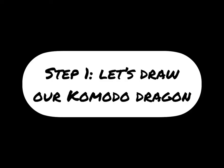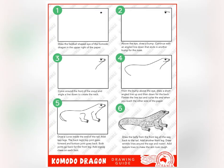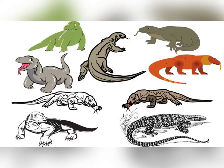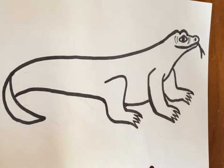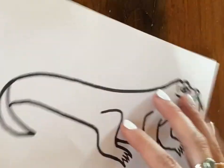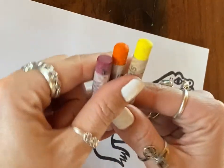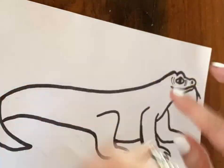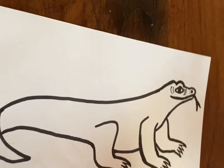Step one: let's draw our Komodo dragon. This is a step-by-step guide to help you — it is also in the general folder. Here are some more Komodo dragons if you would like something a little bit more difficult. Now I've drawn my Komodo dragon and we're going to use warm colors.